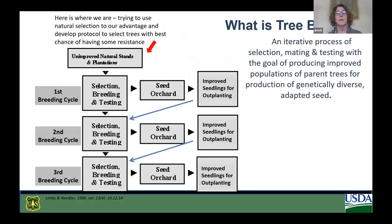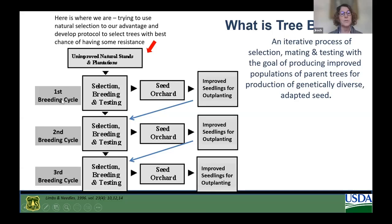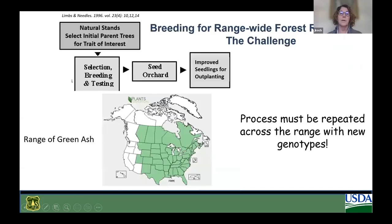Tree breeding is defined as an iterative process of selection, mating, and testing with the goal of producing an improved population of parent trees for the production of genetically diverse, adapted seed. We're starting right here, trying to use natural selection to our advantage to develop a protocol to select trees from natural forests that have the best chance of having some resistance. You can go through many cycles of breeding and testing, selecting the best trees to develop a seed orchard, and every cycle you go through can produce increased improvement in the level and frequency of resistance.